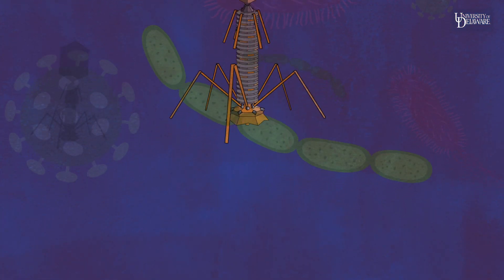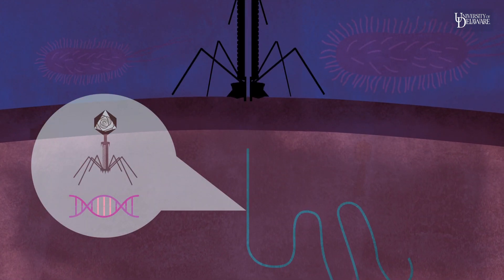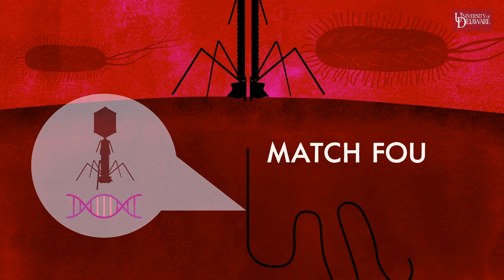Bacterial cells are crafty critters. When a virus attacks, they store a bit of its DNA so they'll recognize that enemy the next time it shows up, similar to a human's immune system.